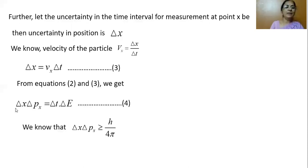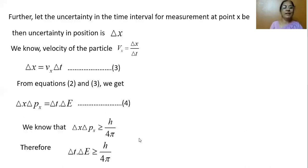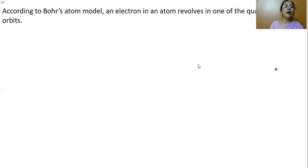We know delta x delta px is greater than or equal to h by 4 pi. Therefore substituting this value, we get the expression delta t delta E is greater than or equal to h by 4 pi. Thus we have derived the Time Energy Heisenberg Uncertainty Principle.